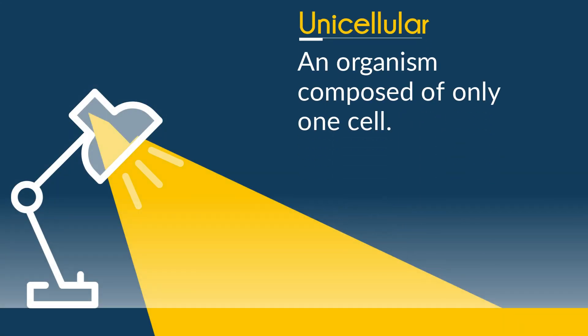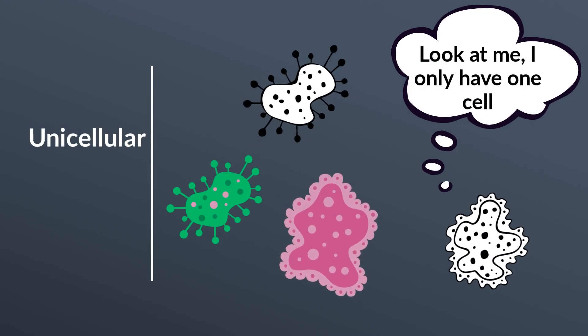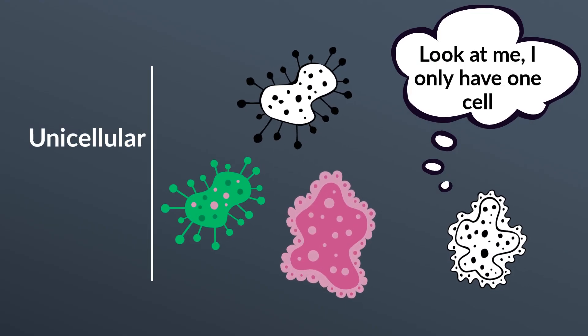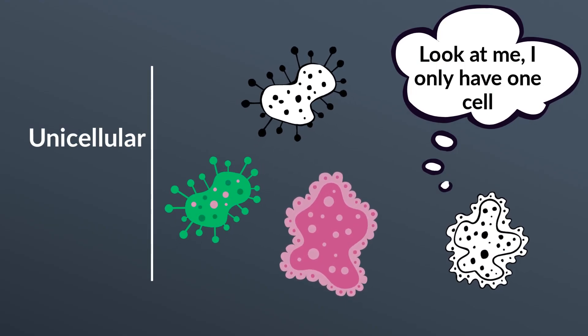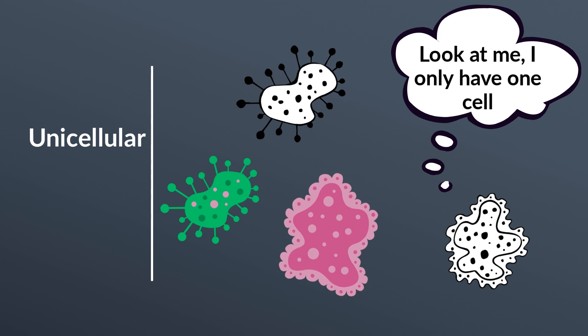Unicellular is an organism made up of only one cell. Some common examples include bacteria and protus.